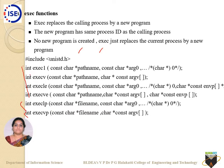The next difference: execl and execlp take arg0 as the second argument, meaning you provide command line arguments starting from the zeroth argument up to the null character — a list of arguments. Whereas execv and execvp take a string array as the second argument; the command line arguments are passed directly as an array.